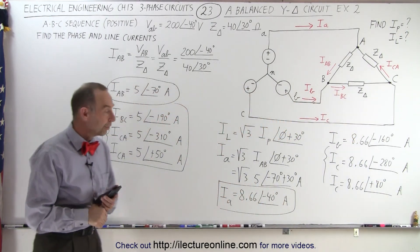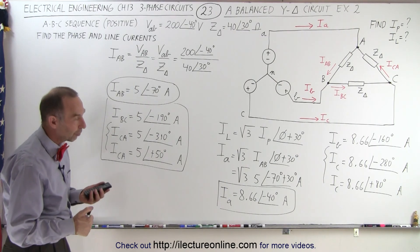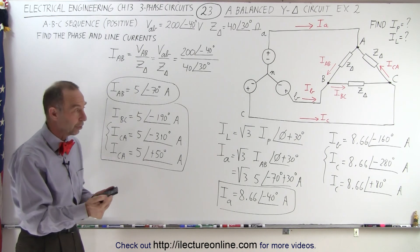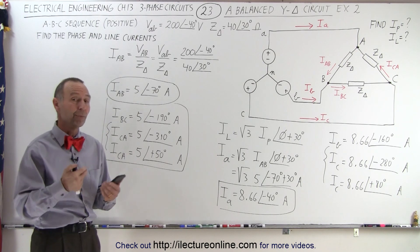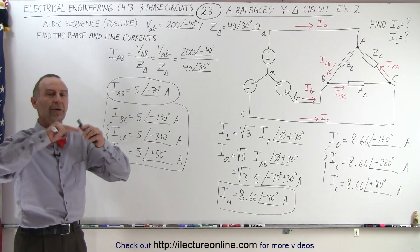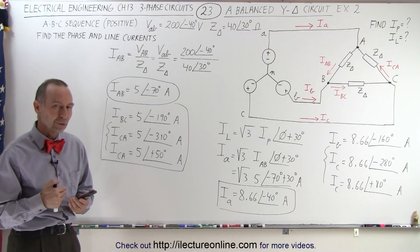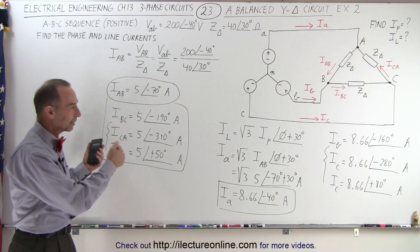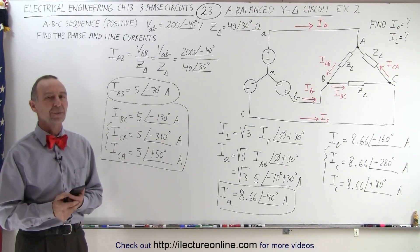And there you have it — that's how you find the phase currents and the line currents. Just remember: whenever you shift from a phase to a line quantity, either voltage or current, you have to add or subtract 30 degrees, and multiply or divide by the square root of 3. In the next video, we will summarize the relationship between line and phase currents and voltages to make future calculations easier.